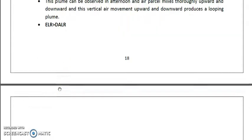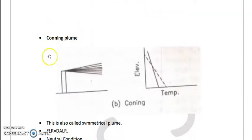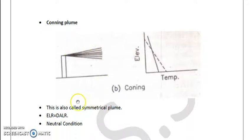Next is coning plume, it's a very interesting kind of plume which is observed when the environment is neutral, where environmental lapse rate is equal to dry adiabatic lapse rate. This is also referred to as symmetrical plume, as shown in the figure where DLR equals ELR.